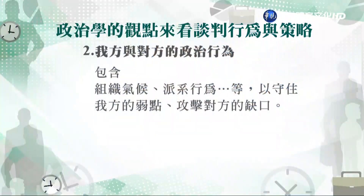有些良性的派系競爭是透過競爭讓彼此把該做的事情做好，例如公職人員努力做好政績，這是良性的派系競爭；但有些是比較屬於鬥爭惡鬥的情況。了解組織氣候和派系行為，可以幫助我們守住我方的弱點——例如我方組織氣候不好或派系鬥得太兇是我方弱點，要設法降低其負面影響；了解對方的派系矛盾則可以找到攻擊對方的缺口。